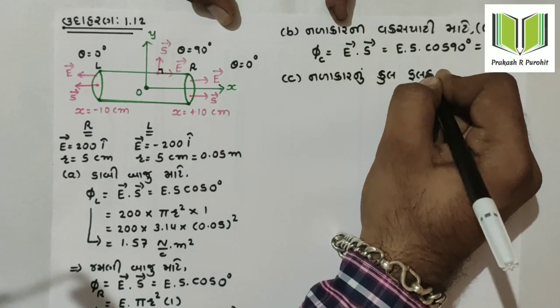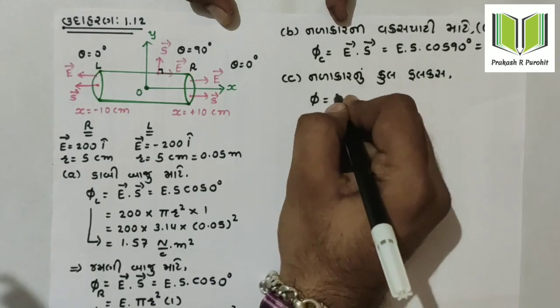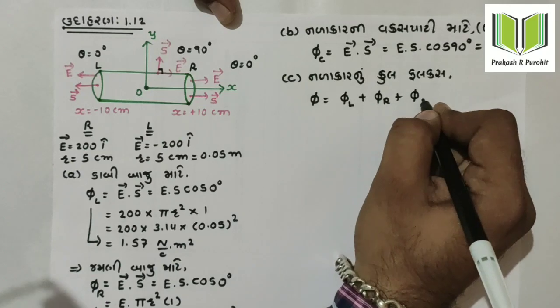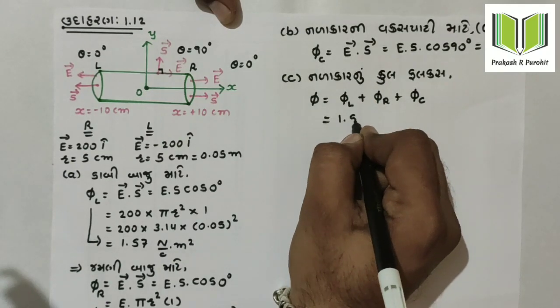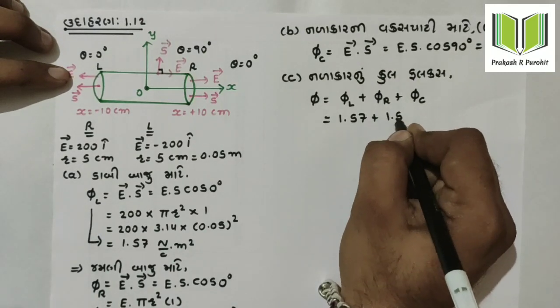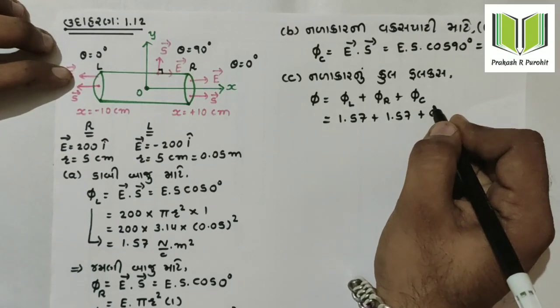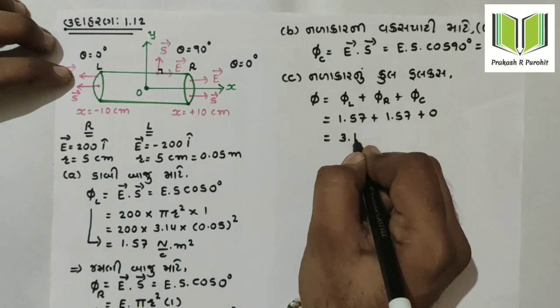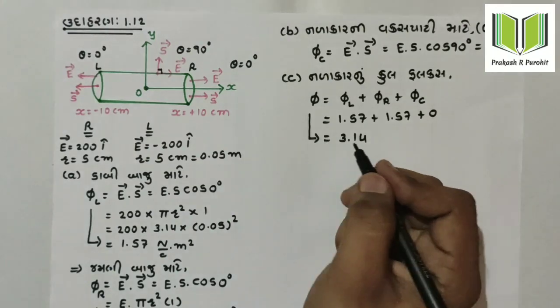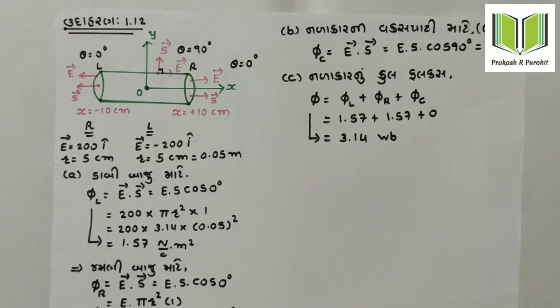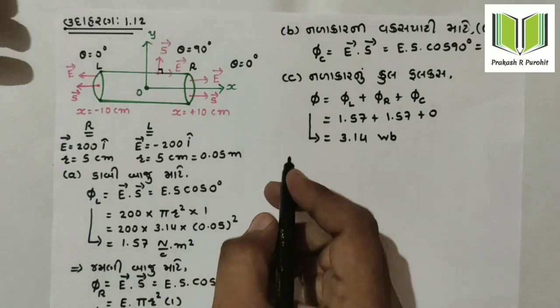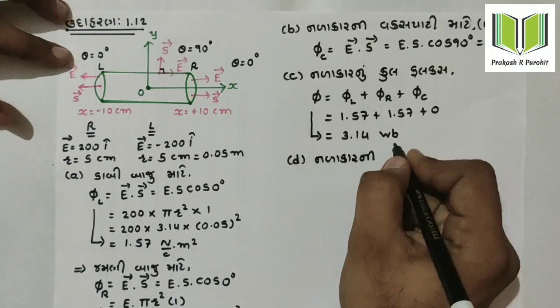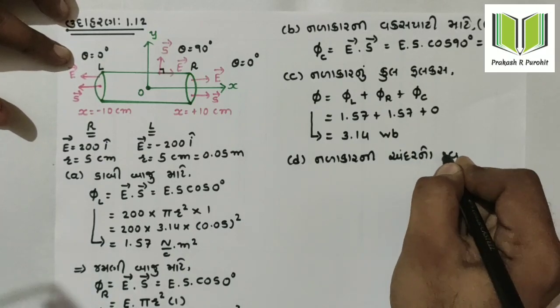The total flux of this cylinder is: left side flux 1.57 plus right side flux 1.57, and the curved surface contributes zero.